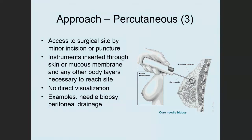The percutaneous approach involves access to the surgical site by minor incision or even just a puncture. Instruments are inserted through the skin or mucous membrane and any other body layers necessary to reach the site. In this case, there's no direct visualization. An example is a biopsy where the physician isn't viewing the tissue directly — some guidance may be involved. Peritoneal drainage is another example of this approach.